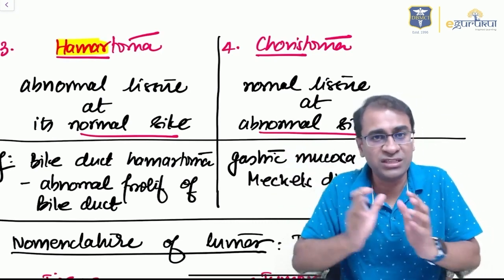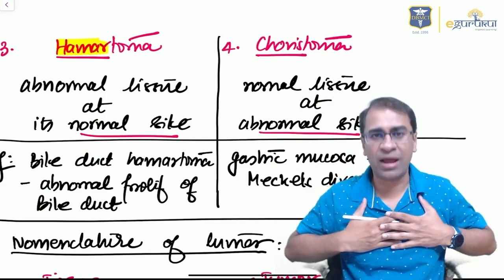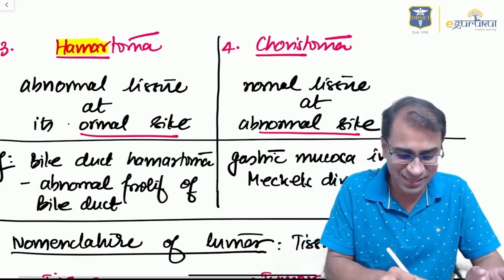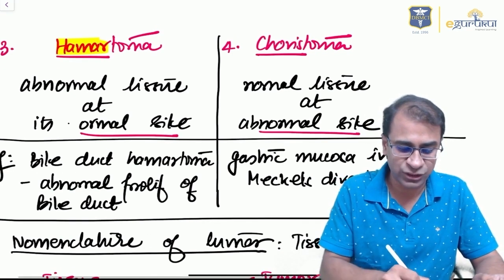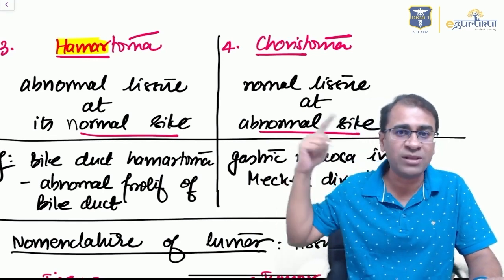These are developmental anomalies, not exactly the term of neoplastic. Hamartoma is normal tissue at a normal site of a tissue. But choristoma is normal tissue at an abnormal site. This is very important.